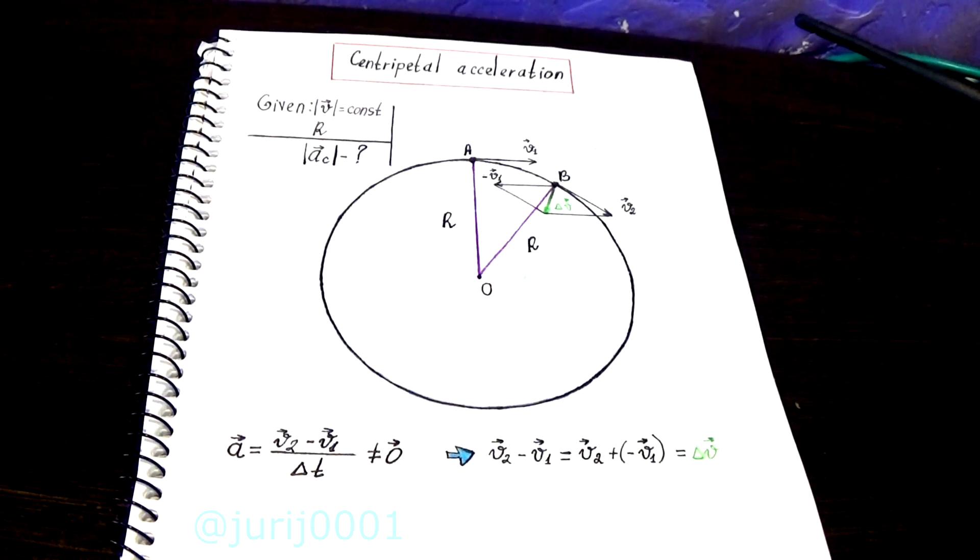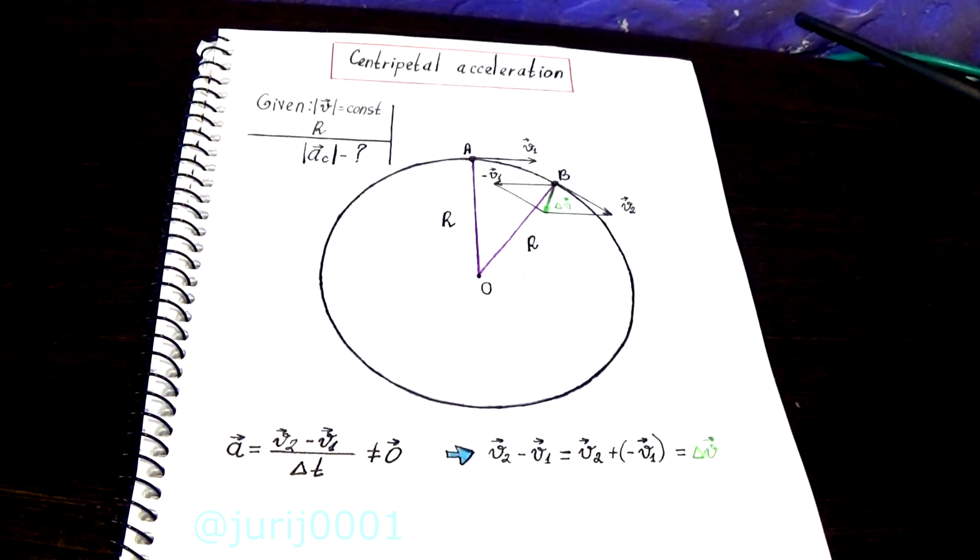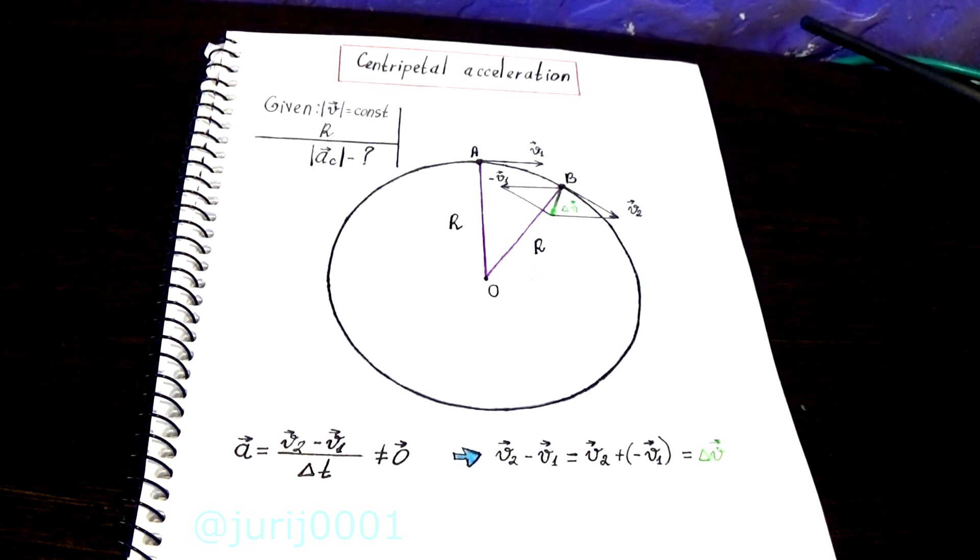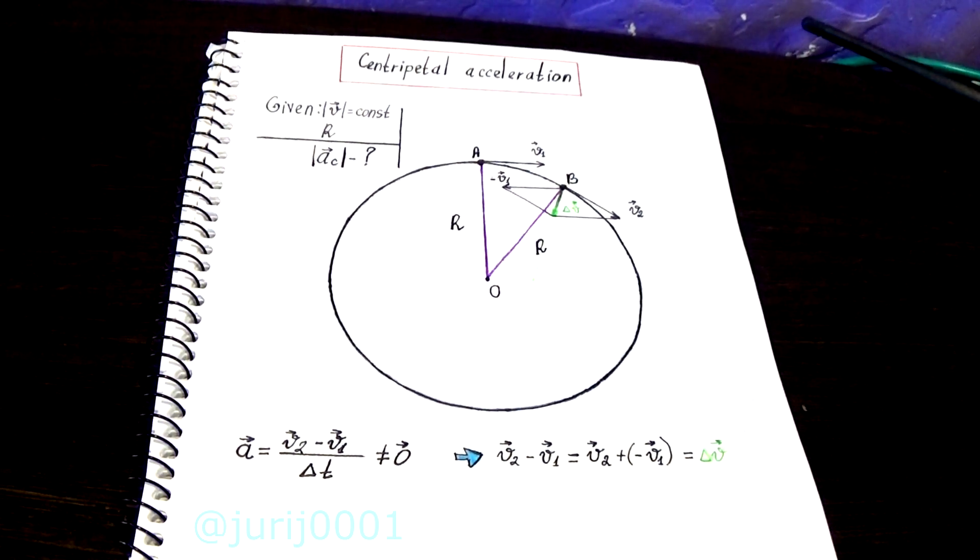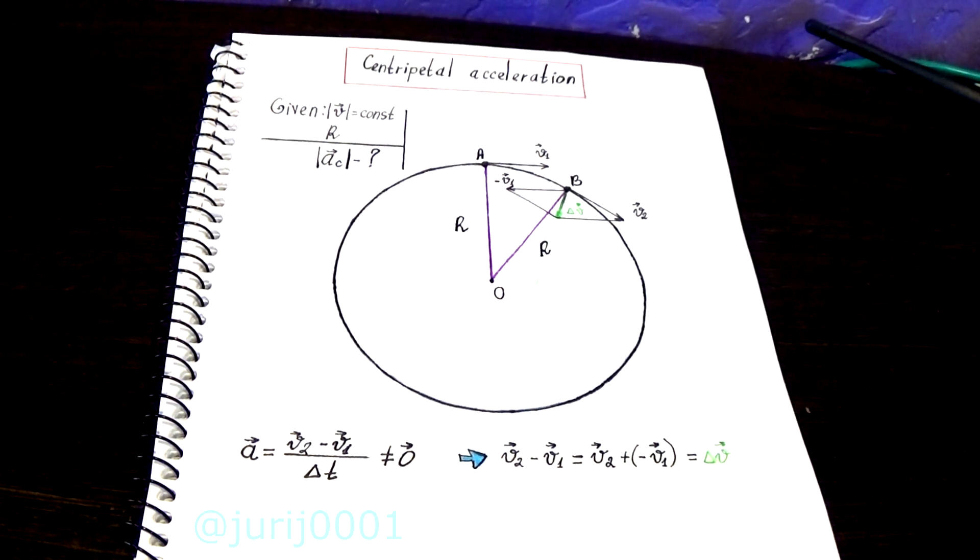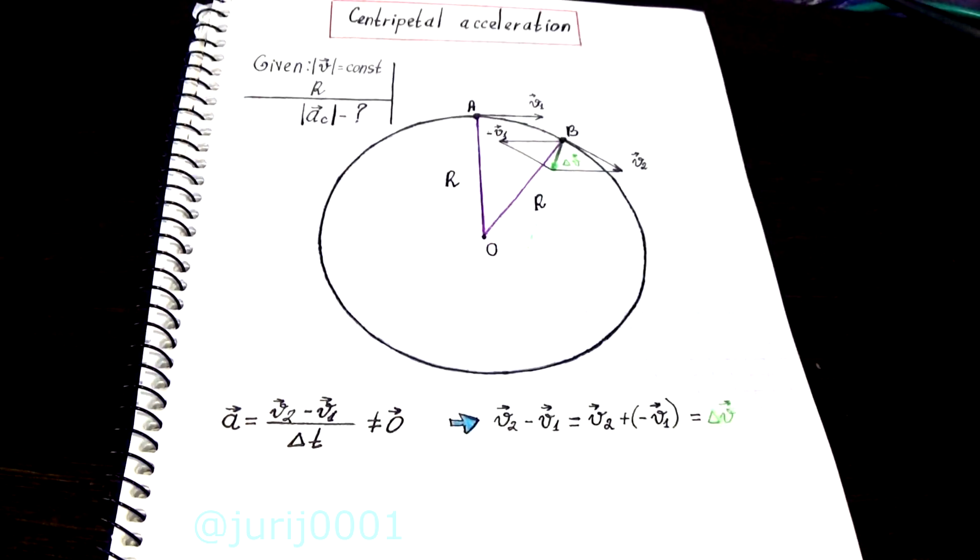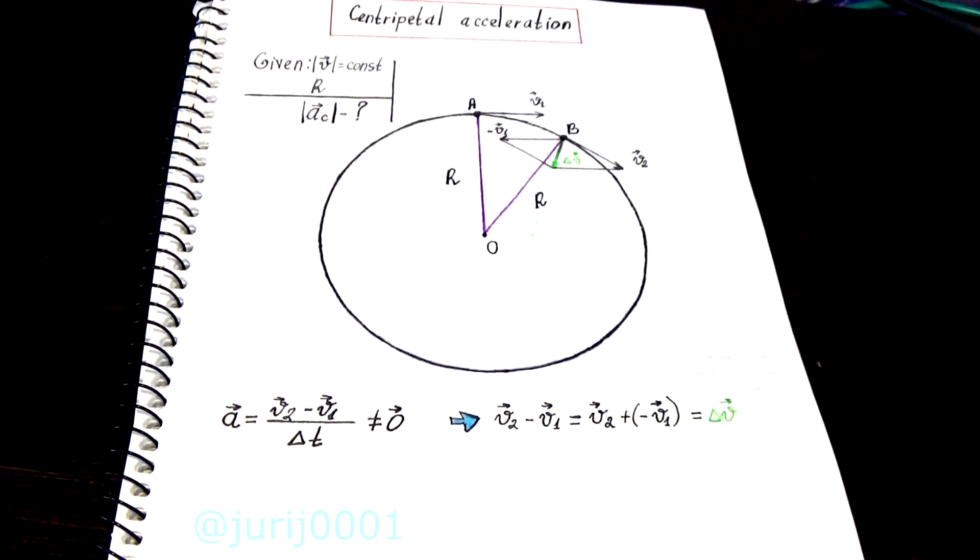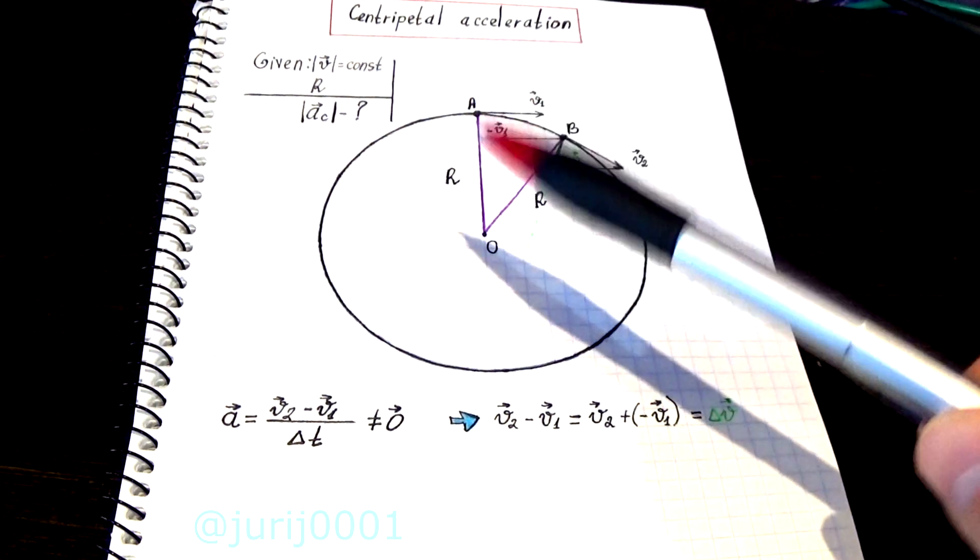The direction of acceleration must coincide with the difference between vectors V1 and V2. I will replace subtraction with addition with the opposite vector. I use the parallelogram rule and get the direction of delta V, which does not fall into the center of the circle.